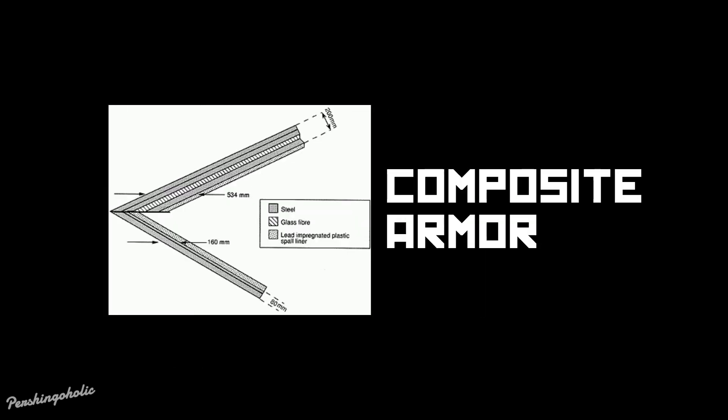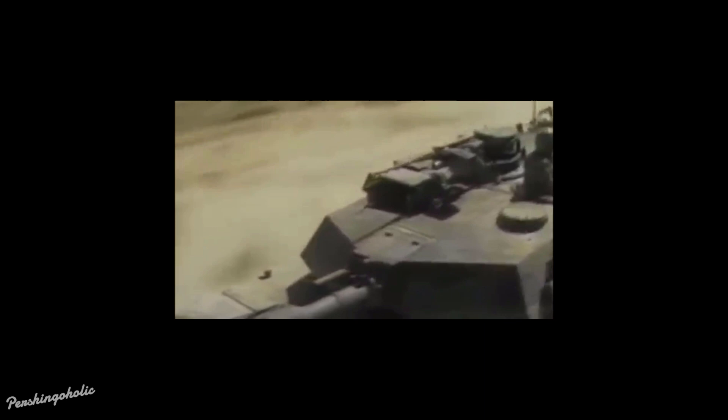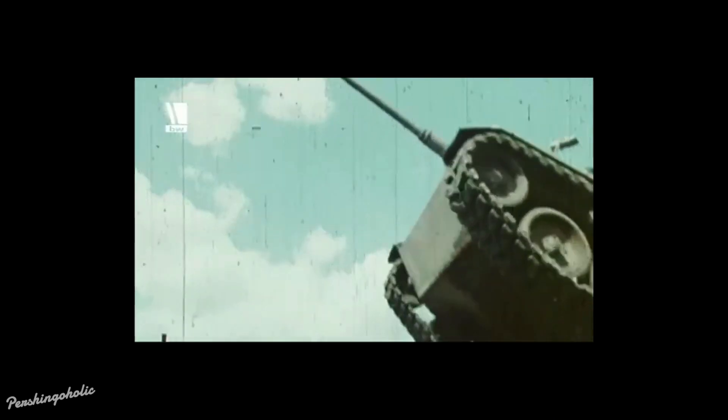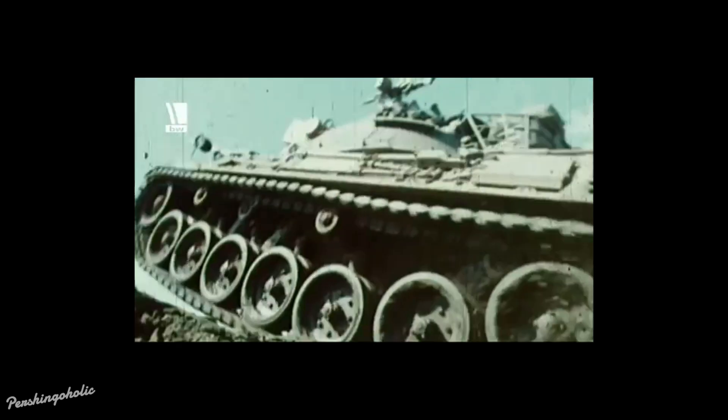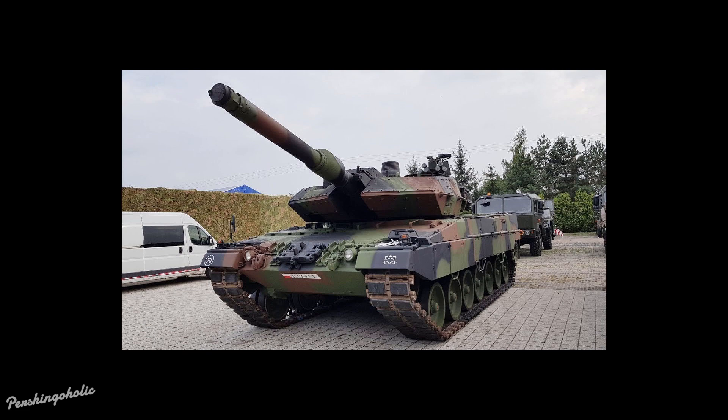After World War II, the Cold War took place. Both the West and the Russians were developing better shells, and the days of regular steel armor were numbered. The Russians started developing composite armor, which featured layers of ceramics and glass. Over time, composite armor became the standard for modern main battle tanks, and all modern MBTs such as the Abrams, Challenger, and Leopard all feature it.